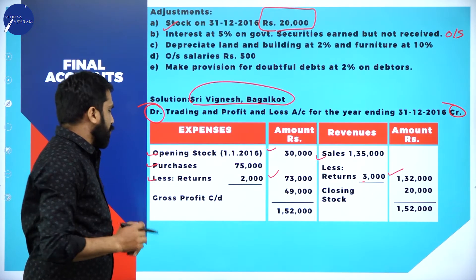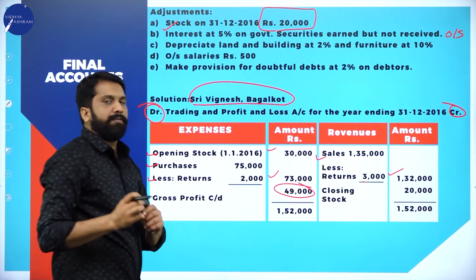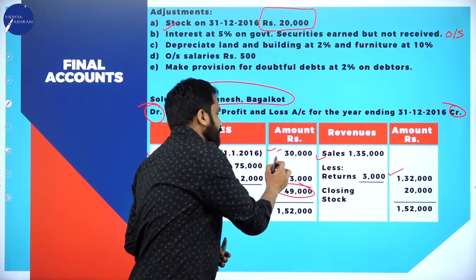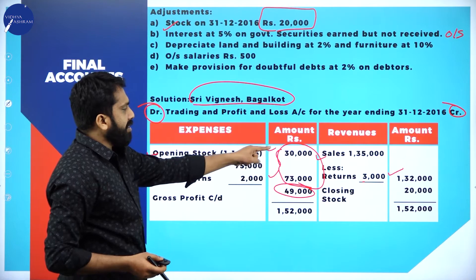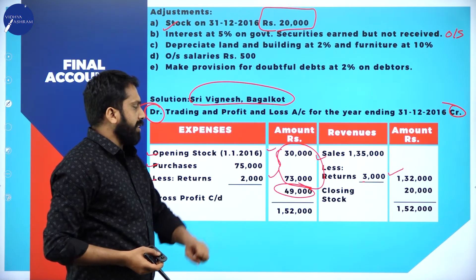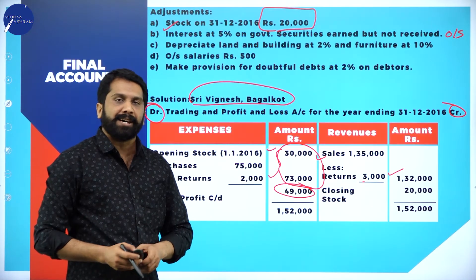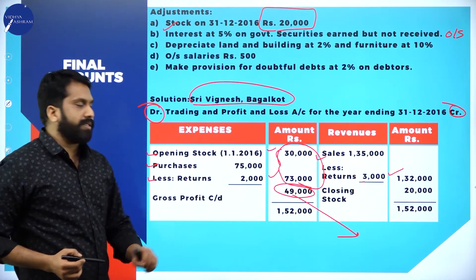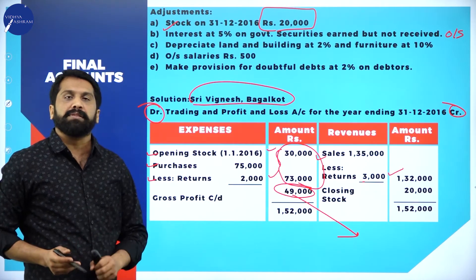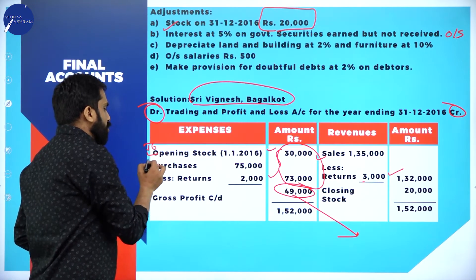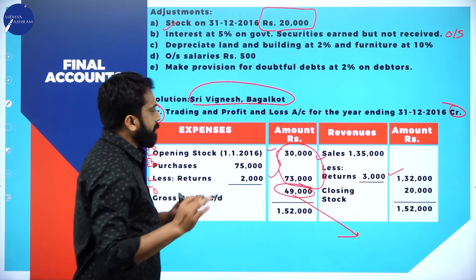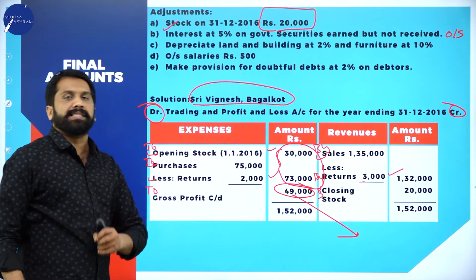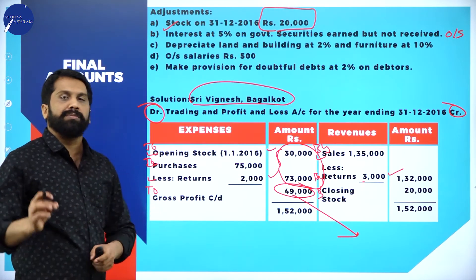This is all about your trading account. Once you got your gross profit - total 152, from 152 you minus these two: 73 plus 30 is 103. 152 minus 103 - your answer is 49,000. This 49,000 will come as gross profit brought down. This side everywhere it is 2, this side everywhere it is by. This is compulsory - if you don't write this, you will lose marks.